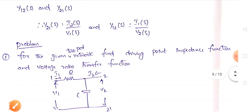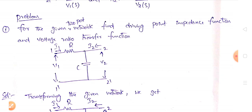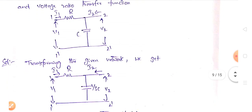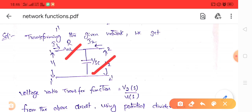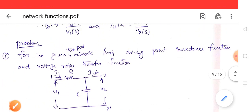Now let us take a problem: for a given two-port network, find the driving point impedance function and the voltage ratio transfer function. In the circuit, the first port has a resistor R and a capacitor C; the second port has no elements. V1 and I1 are at the first port, V2 and I2 at the second. Converting to S-domain: R remains R, and C becomes 1/SC.